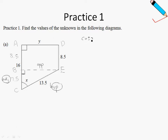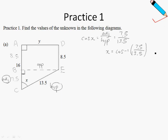So cosine of angle X is equal to adjacent over hypotenuse, which is equal to 7.5 over 13.5. So to find X, I just take cosine inverse of 7.5 over 13.5. If I round this off to one decimal place, I will get 56.3 degrees, to one decimal place.